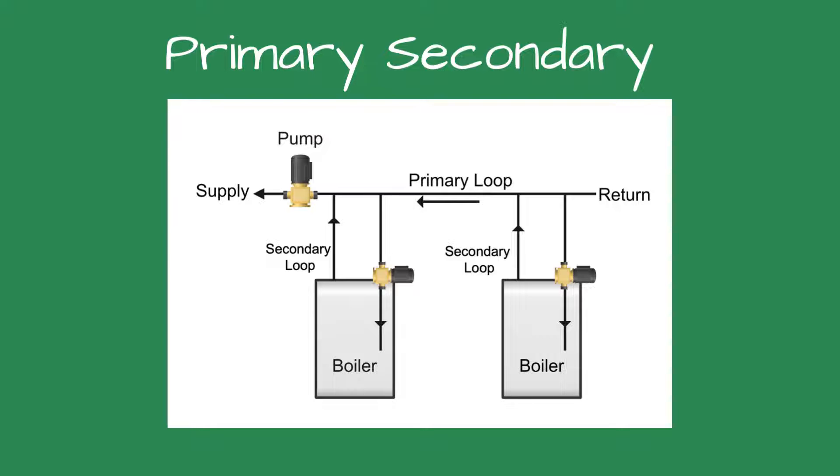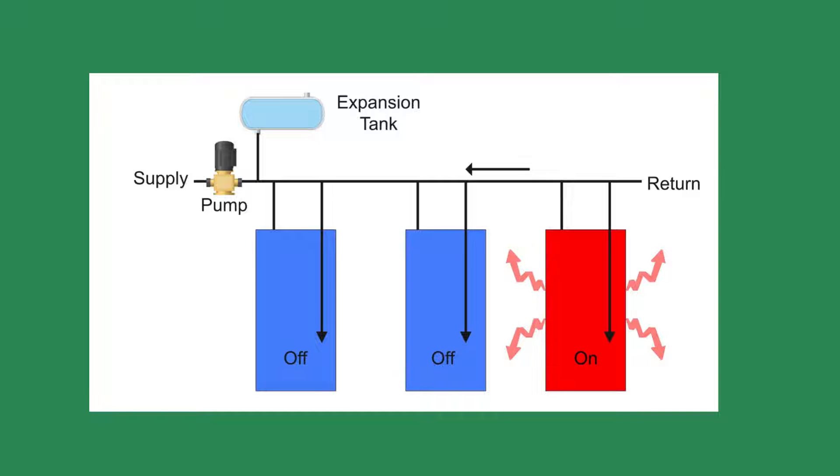What is that called again, he asked. It's called primary-secondary. It allows the idle boiler to be isolated for better efficiency, I explained. I like piping the boilers the old way, he said. He re-piped the other two boilers and the building heated all winter long with no issues.